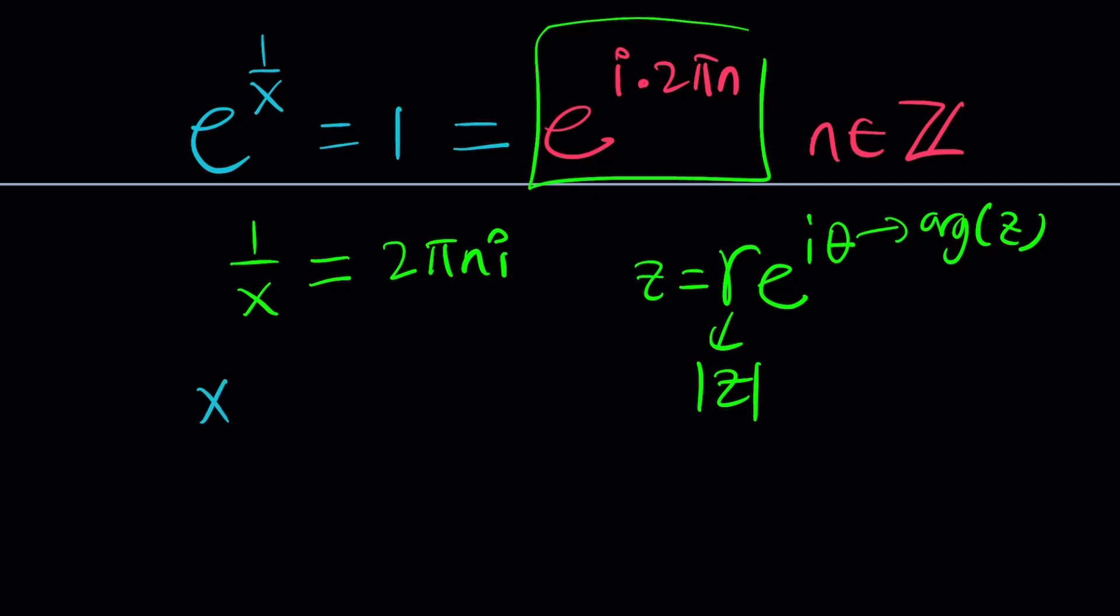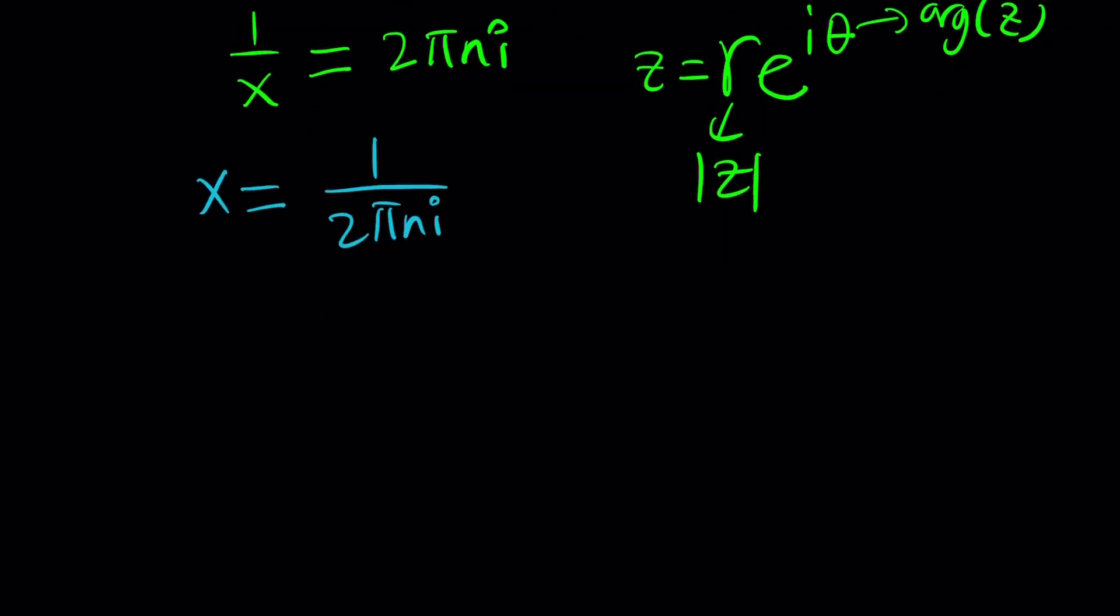So, x is going to be 1/(2πni). And now, I want to get rid of the i at the bottom. That doesn't look good, for obvious reasons. Let's go ahead and multiply by the conjugate.